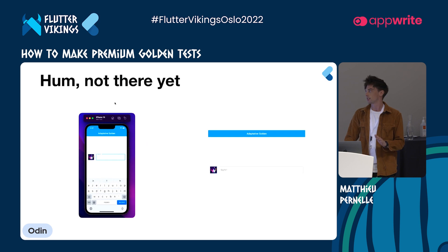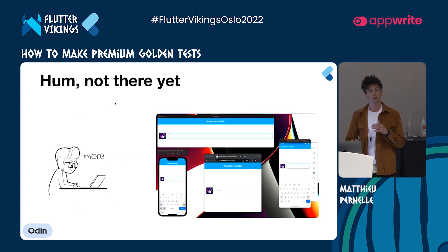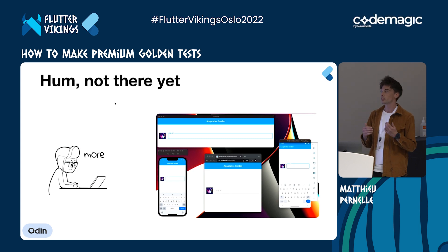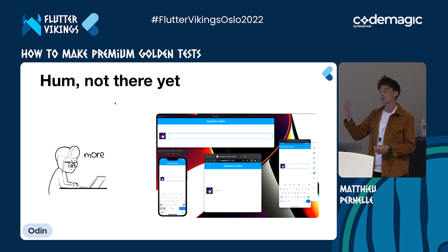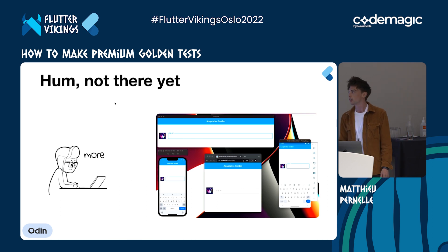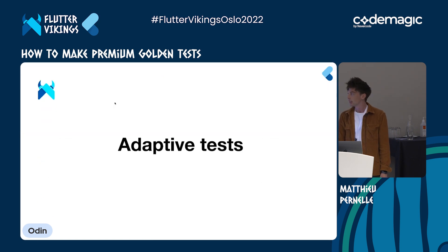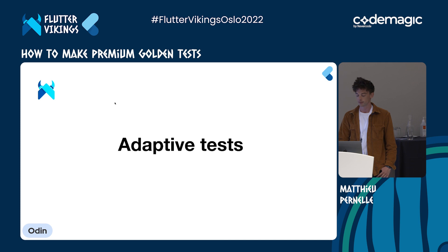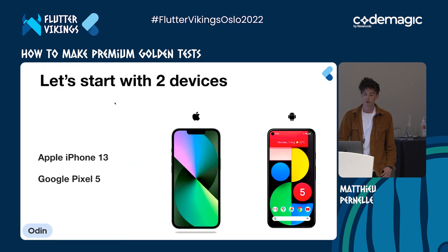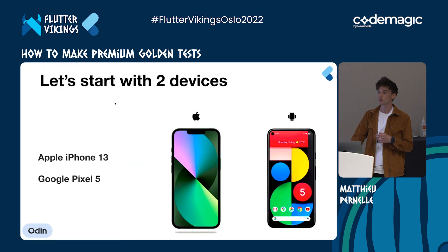But we are not there yet. Our test doesn't represent the diversity of devices the application will be run on, so we need to dig a little bit more. That's why we created adaptive test. To simplify the concept, we can start with two devices: an iPhone 13 and a Google Pixel 5.